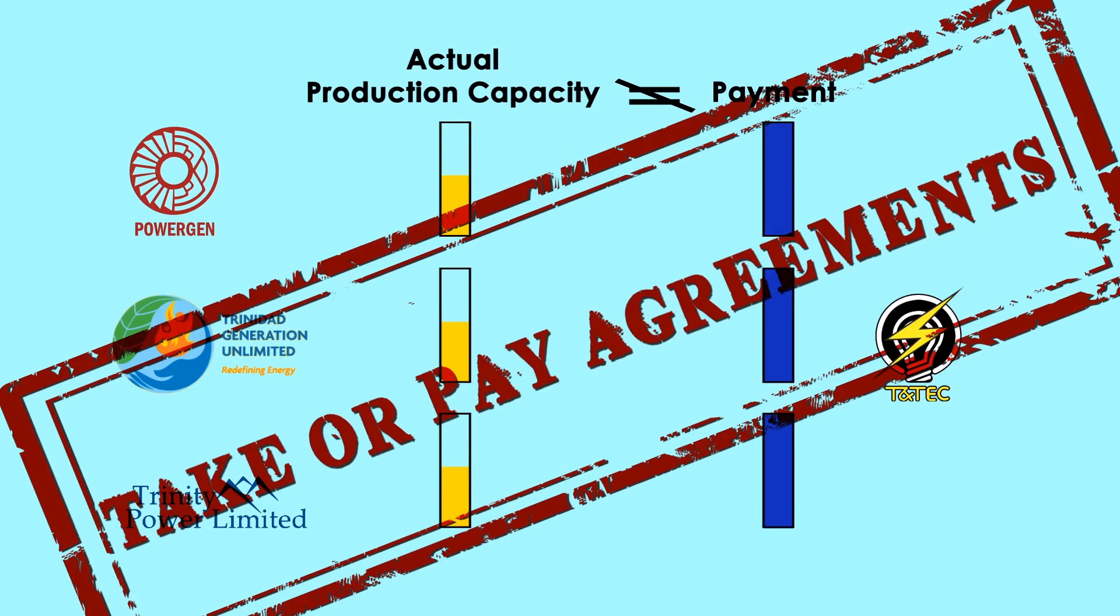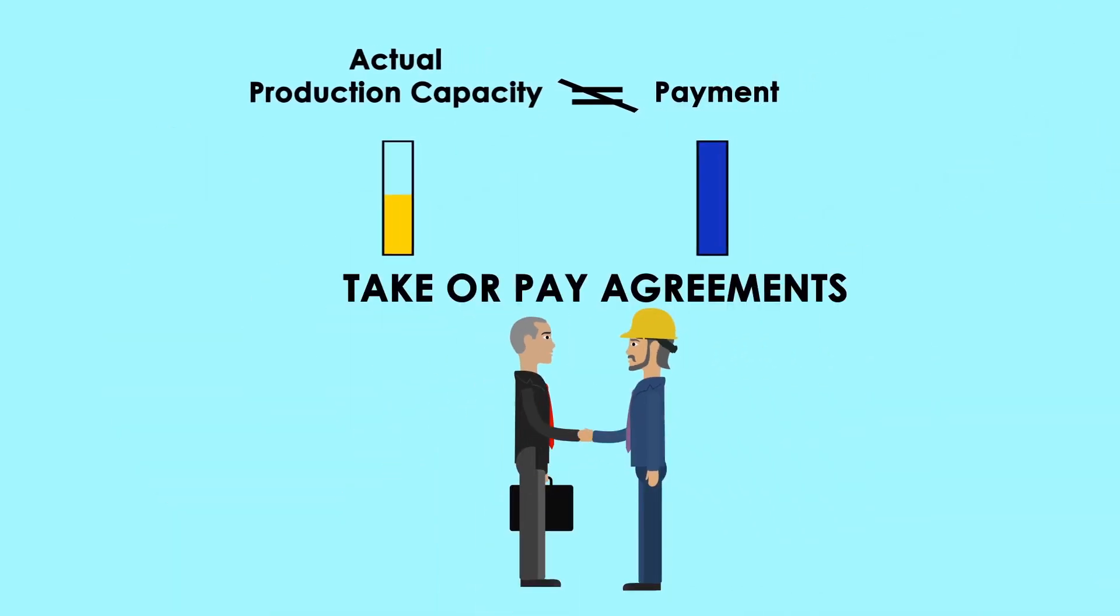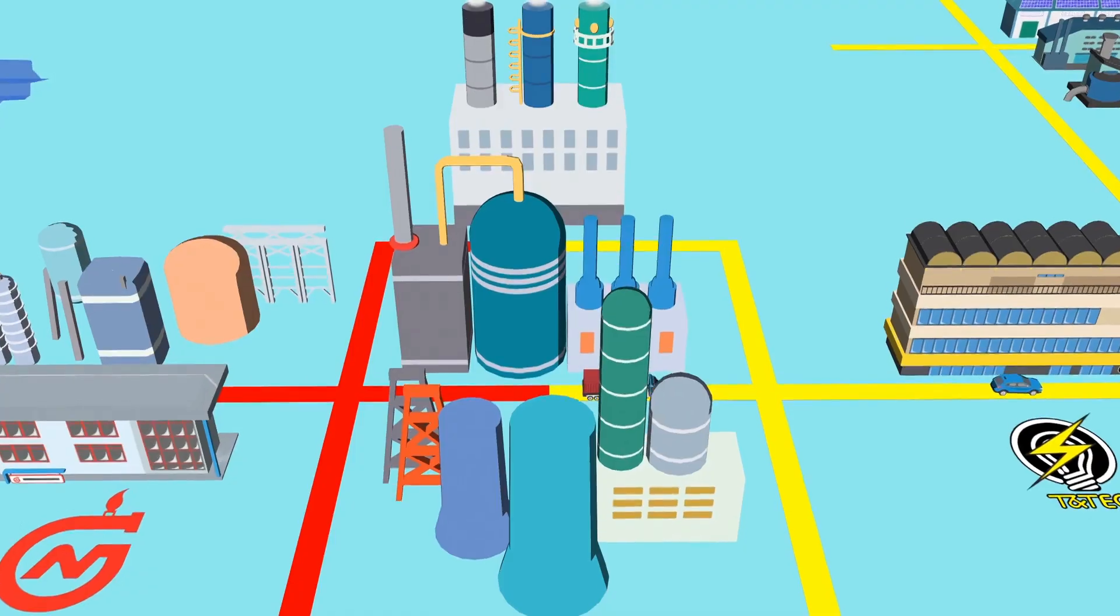These are called take-or-pay agreements. And unfortunately, they give the power producers no incentive to invest in more efficient power plants, even if they would like to, since their compensation is not at all related to the natural gas input or electricity output on a day-to-day basis.